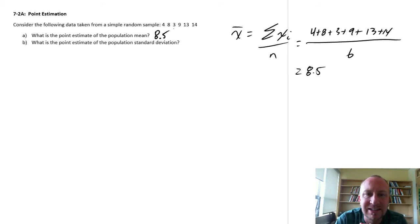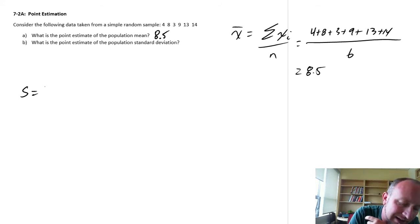The point estimate of the population standard deviation. So this calculation can be a little bit more tedious. This is going to be the square root of these squared deviations. So we look at these deviations from the mean, we square them, we add those all together, and here we divide by n minus 1.